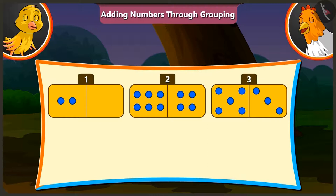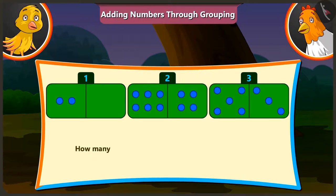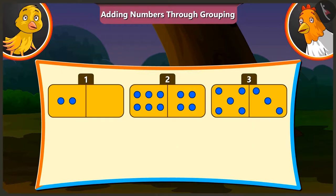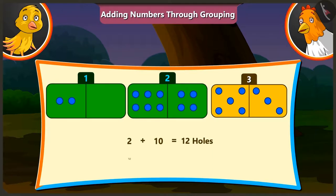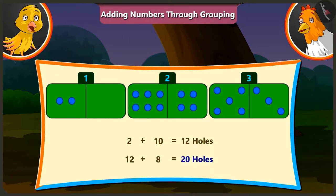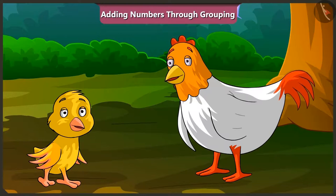Can you tell me how many holes there are on all three domino cards? To find that, we have to add the number of holes on all three cards. So, there are a total of 2 and 10 — that is 12 holes. And 12 and 8 — that is 20 holes. Well done, Peeloo.